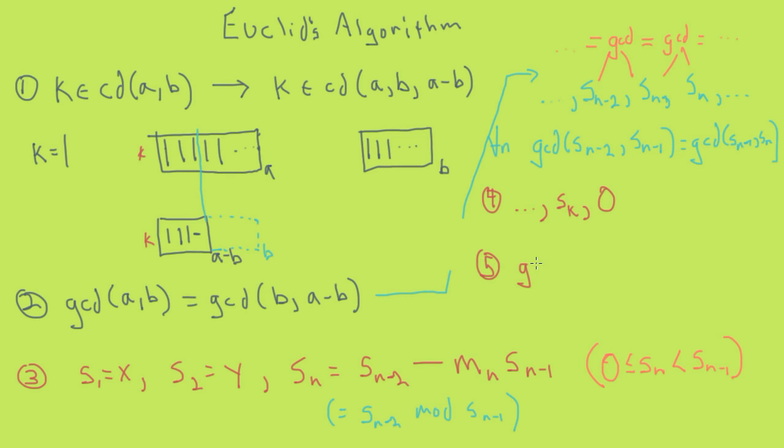The final proposition we need is that the greatest common divisor of any integer x and 0 is equal to x. That is because every integer divides 0, therefore the greatest common divisor of any integer and 0 is the integer itself.